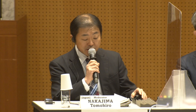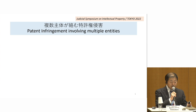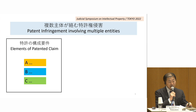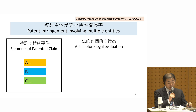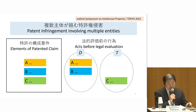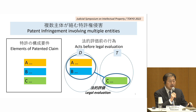Let's start the panel discussion. First of all, I'm going to explain a little bit in Japanese. There are various forms of patent infringement involving multi-entities. Among them, we actually deal with the following issue. For example, if there is a patent constituted by three elements, elements A through C, when seen without legal evaluation, entity D is engaged in acts corresponding to elements A and B, and entity T is engaged in acts corresponding to element C.